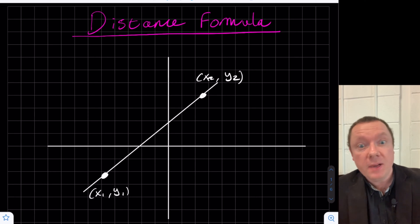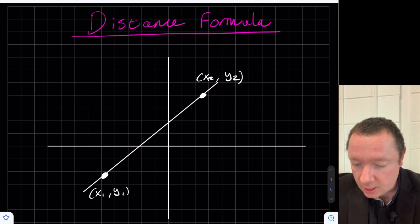Distance formula is just a way to visualize Pythagoras, essentially, to find the distance between two points. So let's say I've drawn a line on a coordinate grid. Let's call that coordinate grid y and x, just to be clear.